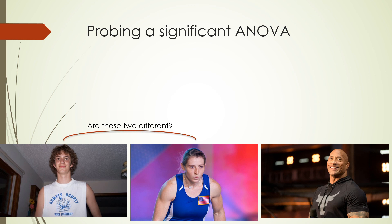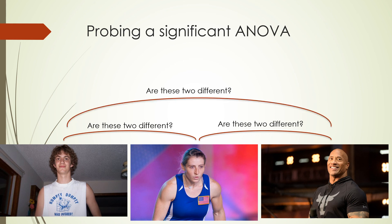When we probe that significant ANOVA, we ask: is Connor significantly different than Barclay on strength? Is Barclay significantly different than The Rock on strength? Is Connor significantly different than The Rock on strength? We compare me to Barclay, me to The Rock, and Barclay to The Rock — so we're making three total comparisons.